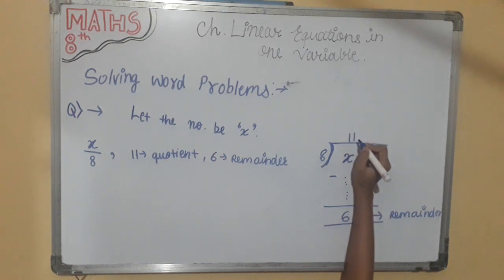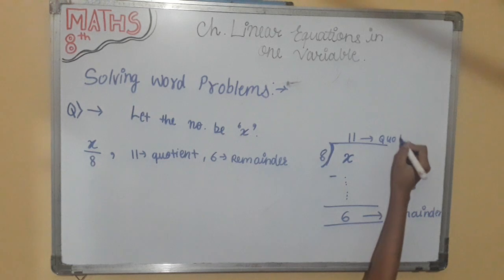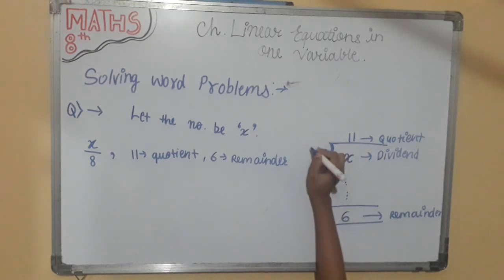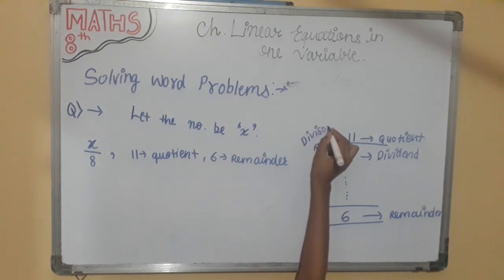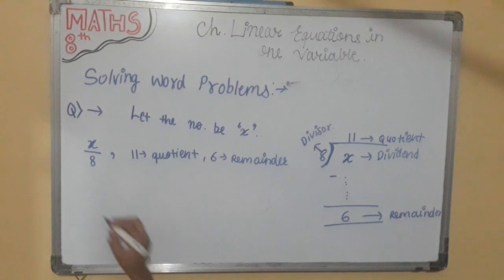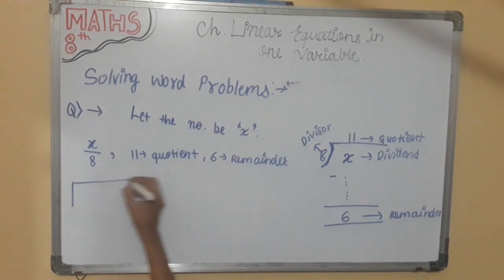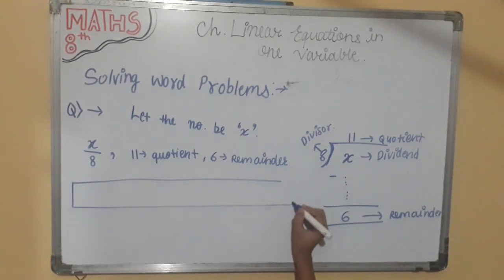Here will be the quotient. This will be the dividend and this is divisor. So in division, we know the formula.